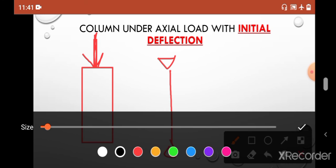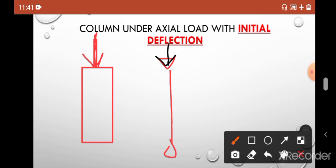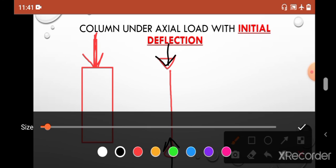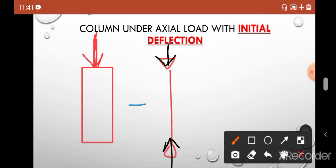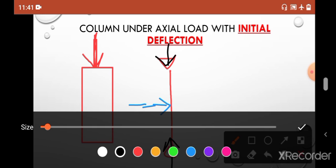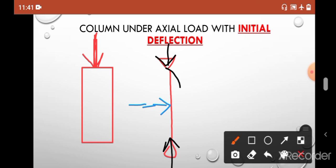If we draw the line diagram, this is the support, this is the support, and the load - let me mark it with black color - this is your load. But what happened? Accidentally there is some lateral load coming to this column, and due to this lateral load there is a very small deflection which is marked by black color like this. This deflection, let's say, is delta.